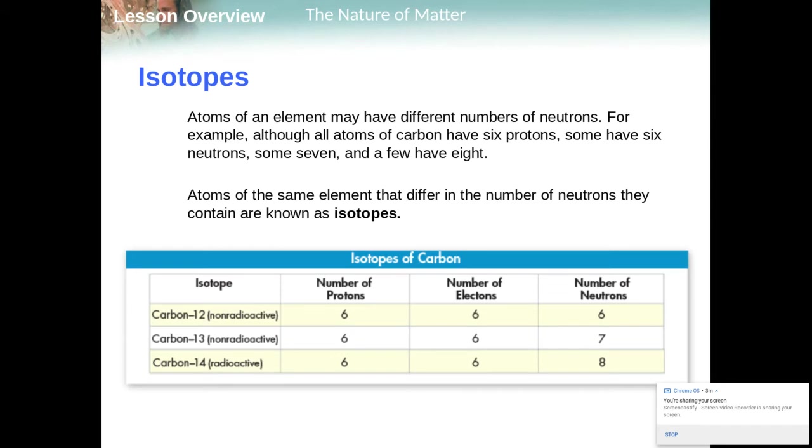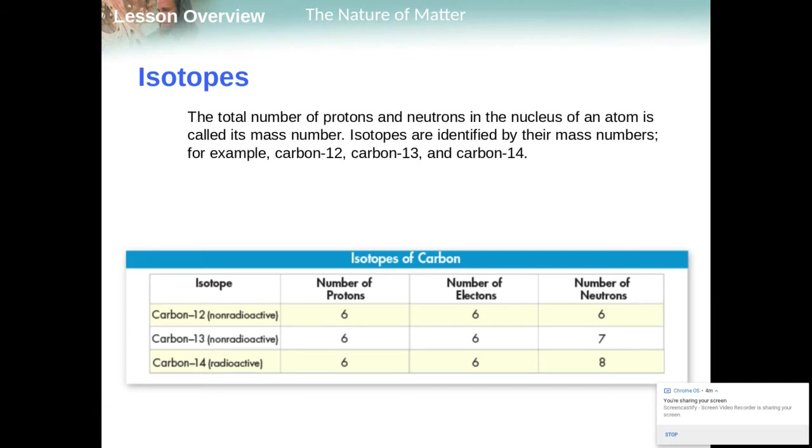Isotopes though, sometimes we have a different number of what are called the neutrons that we talked about. Atoms are the same element that differ in the number of neutrons they contain are known as isotopes. So carbon 12, our regular carbon we see all the time, 6 protons, 6 electrons, 6 neutrons. So 6 and 6, giving us our atomic number. But carbon 14, that's the one that I really want to talk about. We see 6 protons and 8 neutrons, giving it 2 more than carbon 12.